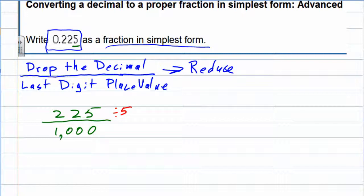If you get 5 that's fine because you can do that in two steps but 25 will give it to us all at once. Top and bottom is divisible by 25. In the top, 225 divided by 25 gives us 9.